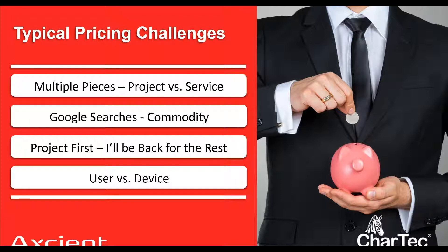Tom: I really like that approach. It was always a struggle. I had a lobbying firm in D.C. where every single person — about 20 people — had seven devices, all Apple, everything had to be synced at once. Getting away from per-device pricing and just having one cost per user is cleaner. I don't want to get into a nickel-and-dime situation. I want to give them a price, get a check, and move on.